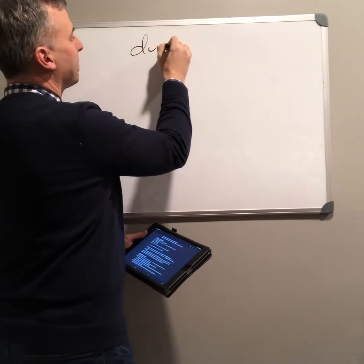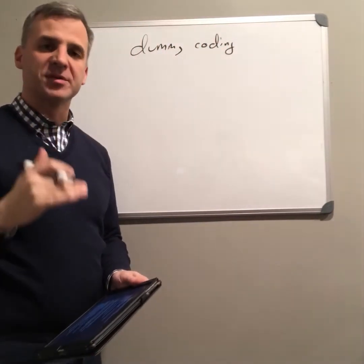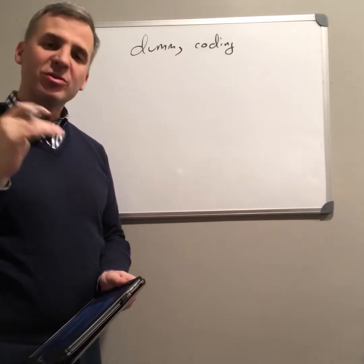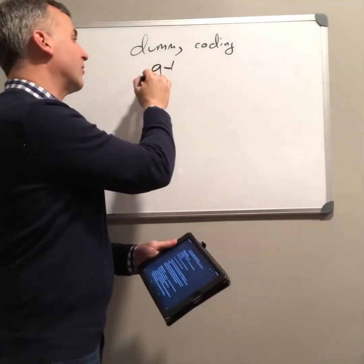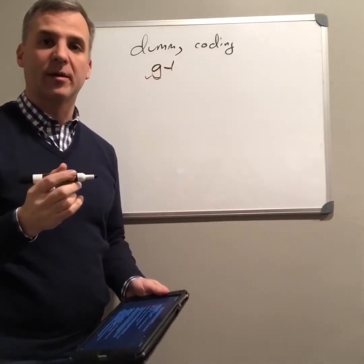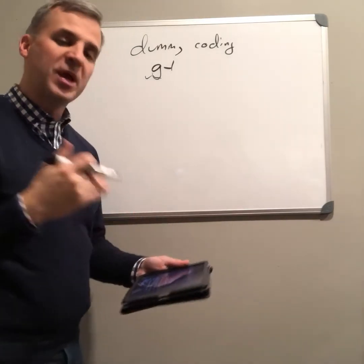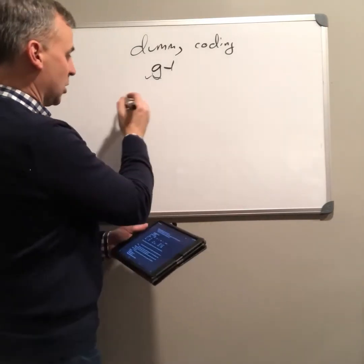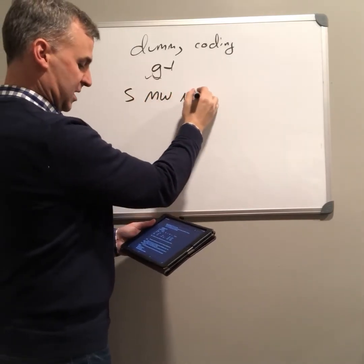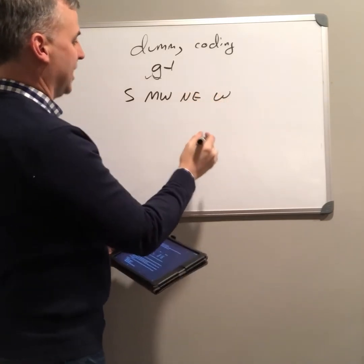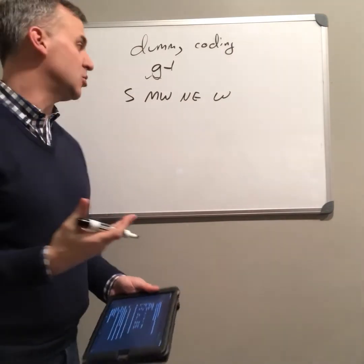When using dummy coding, I set up a number of variables in my regression equation. The number of variables I'm going to use is g minus one, or the number of groups I have minus one. For instance, if I am interested in people from different regions — from the south, from the midwest, from the northeast, and from the west — these are four different categories of regions that you could be from.